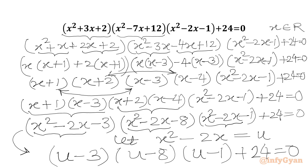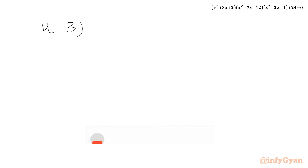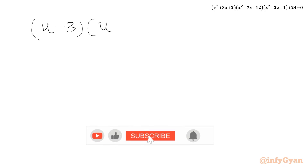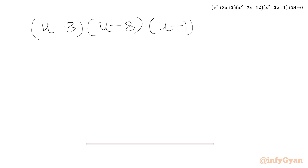Now we will solve this cubic equation. We have (u-3)(u-8)(u-1) + 24 = 0.